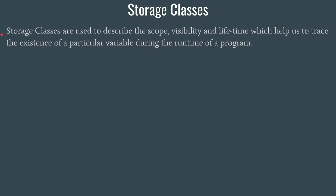As per the definition, storage classes are used to describe the scope, visibility, and lifetime, which help us to trace the existence of a particular variable during the runtime of a program. There are three main terms to focus upon: the first one is scope, second one is visibility, and the third one is lifetime.